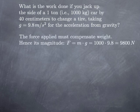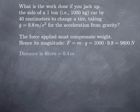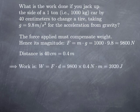The force that we must apply must compensate the weight. The magnitude of the weight is just the mass multiplied by acceleration of gravity. Here we have 1000 kg multiplied by 9.8, and we get 9800 N for the magnitude of the force necessary. Then we apply this constant force to move the car by 40 cm, or 0.4 m. Therefore the work is 9800 times 0.4, which equals 3920 joules.